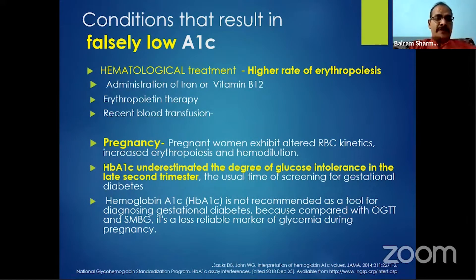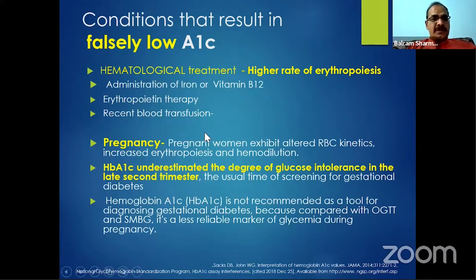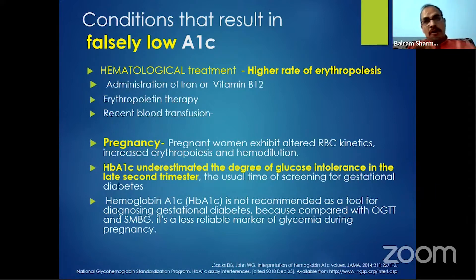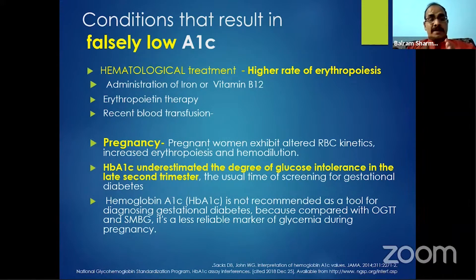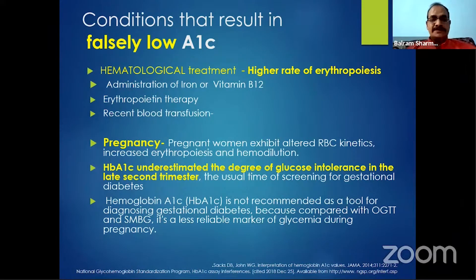Hematological treatments that can cause falsely low HbA1C include iron or vitamin B12 administration, erythropoietin therapy, and recent blood transfusion. Pregnancy is a specific situation with altered RBC kinetics, increased erythropoiesis, and hemodilution — particularly in the latter half of the second trimester — where HbA1C may underestimate actual glycemic status. HbA1C is therefore not recommended for diagnosing gestational diabetes; OGTT should be used for screening.